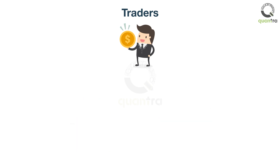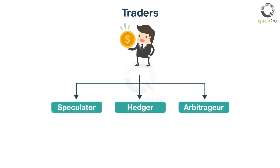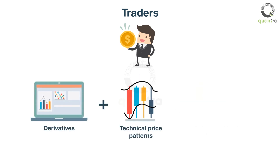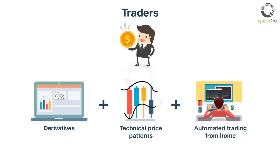Additionally, based on the trading activity performed by traders, they can be further classified as a speculator, hedger, or an arbitrager. You will learn more about these roles in the upcoming unit. Usually, traders can be classified in multiple ways. Consider a trader trading derivatives products based on technical price patterns in an automated fashion from the comfort of his home — can you guess under which category this trader belongs?